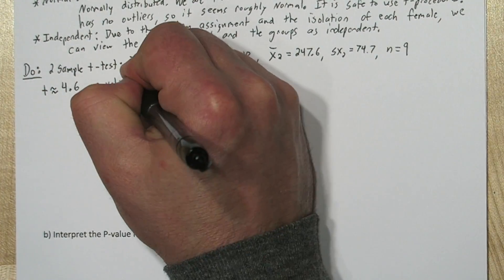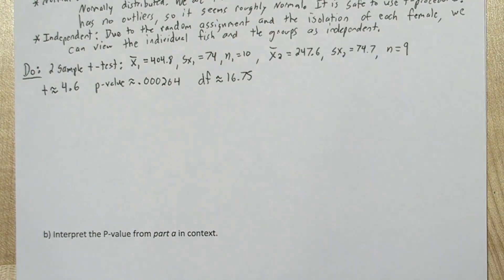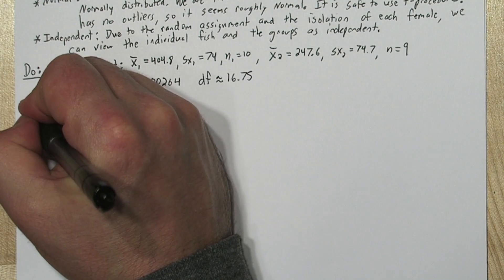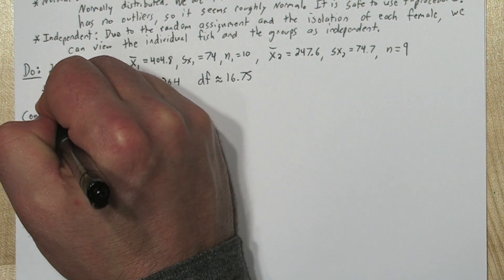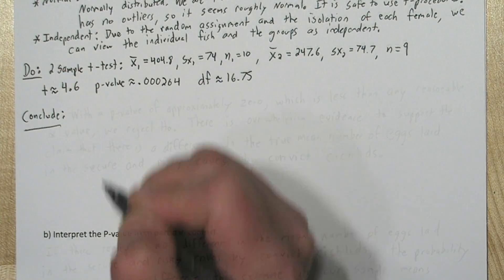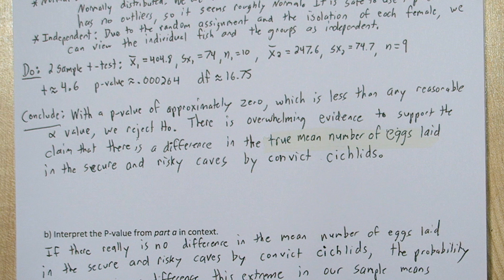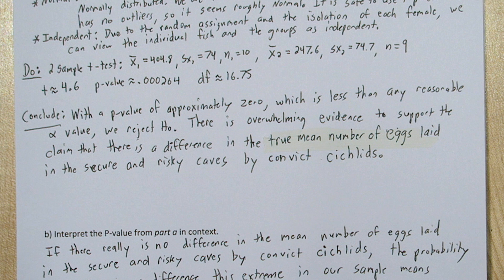Now we're ready to conclude. Any time our p-value is reported in scientific notation, you can use this alternate wording in your conclusion: with a p-value of approximately zero, which is less than any reasonable alpha value, we reject the null hypothesis. There is overwhelming evidence to support the claim that there is a difference in the true mean number of eggs laid in the secure and risky caves by the convict cichlids.